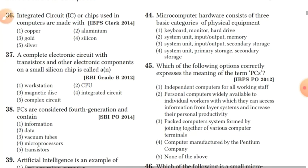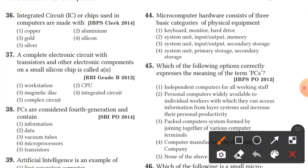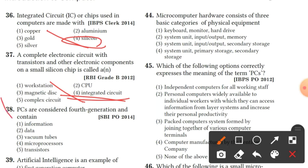Question 35: third generation computers were made with integrated circuits. Option 3 is the right answer. Question 36: integrated circuits, ICs or chips, are made with silicon. Option 4 is the right answer. Question 37: a computer electronic circuit with transistors and other electronic components on a small silicon chip is called an integrated circuit. Option 4 is the right answer. Question 38: PCs are considered fourth generation, based on microprocessors.